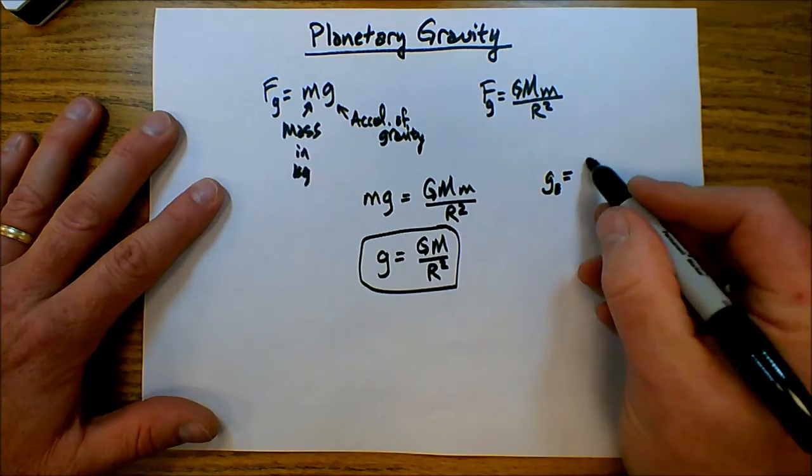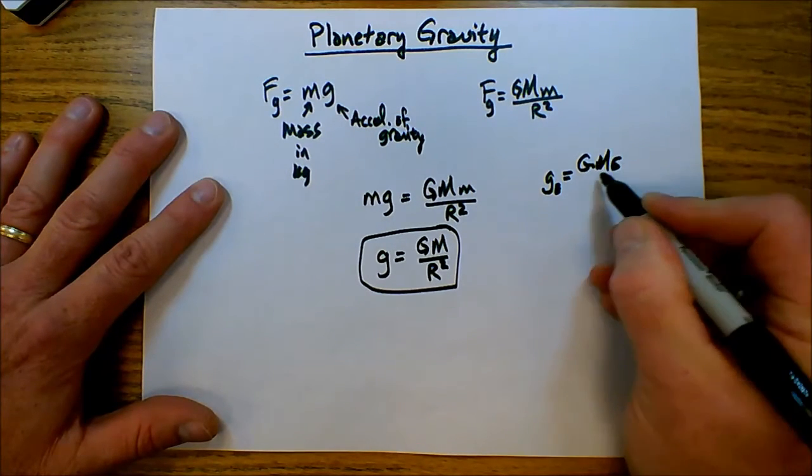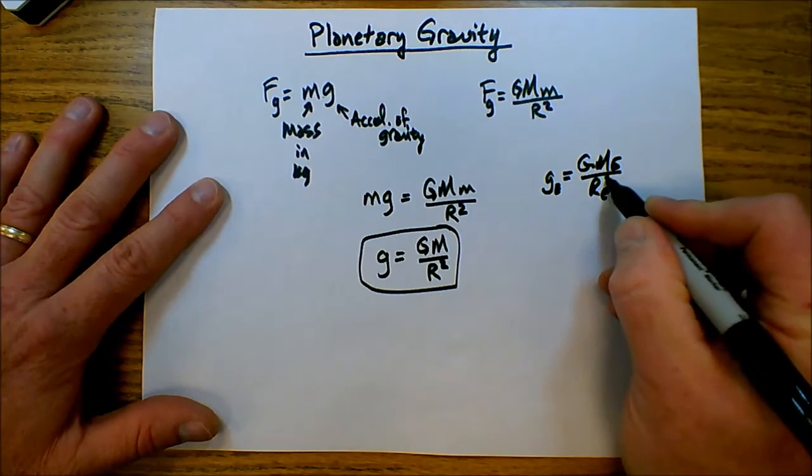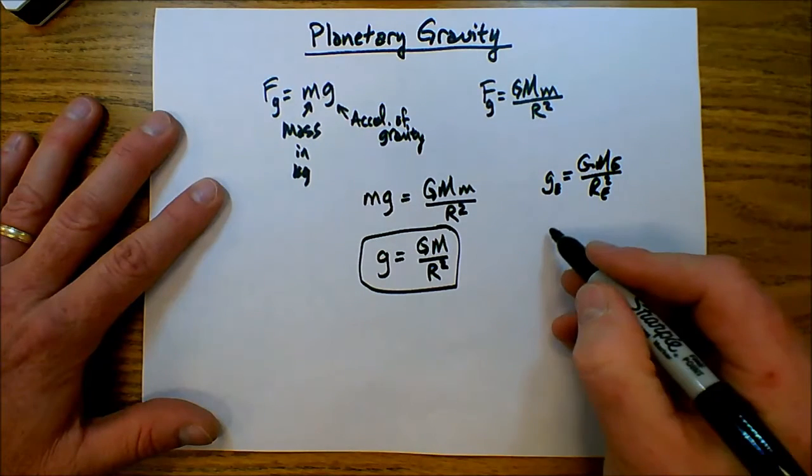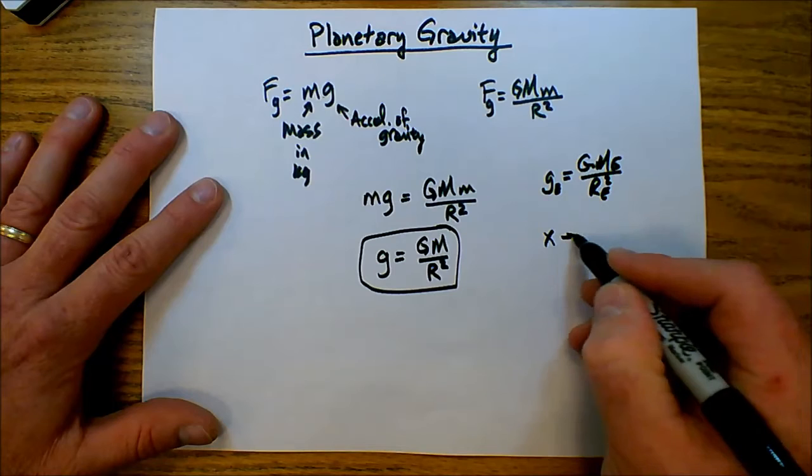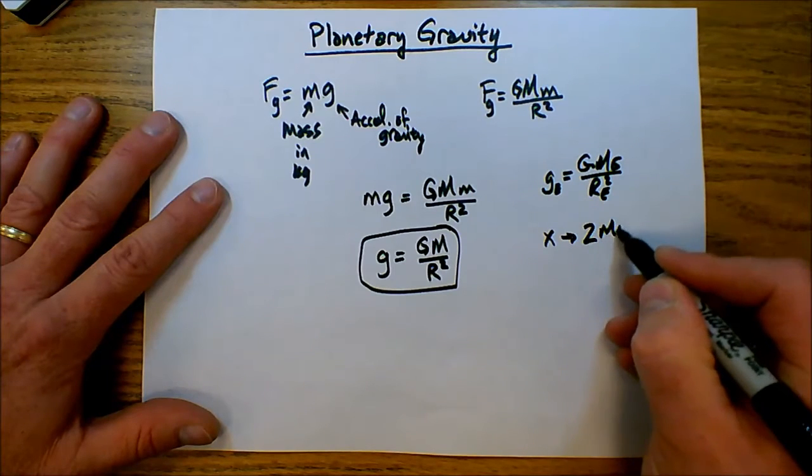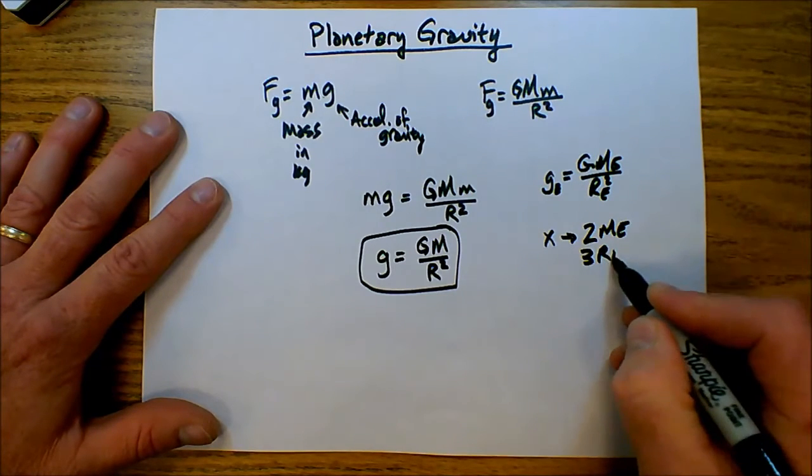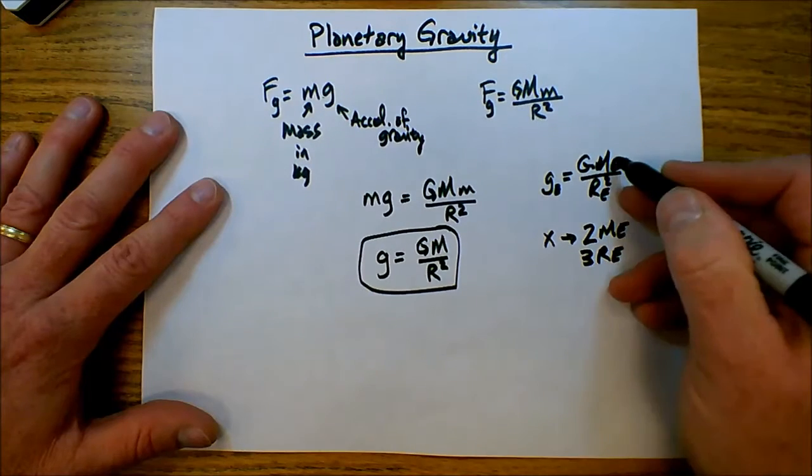So for the Earth, it's big G mass of the Earth over radius of the Earth squared. So my new planet, planet X, is double the mass and triple the radius. So I simply plug these into this formula.